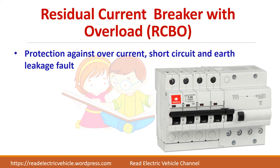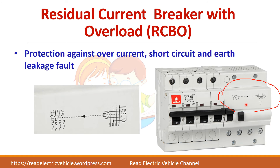Here we can see a single unit which works as an RCBO. Earlier we saw that an RCD block has the provision to connect the MCB separately — you have to choose the MCB and connect it into the RCD block. Here, this is available as a ready-made kit. If you see the symbol, it shows that this is an MCB and this is a RCCB, and both are interlinked together in a single unit.